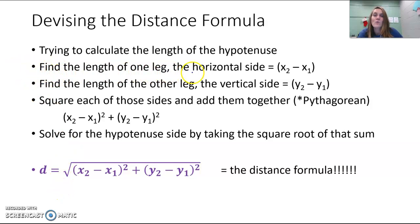We can actually put all of that together to create a distance formula, right? If we find the length of one of the sides, the horizontal side, we subtracted the x's. So x sub 2 minus x sub 1. To find the length of the vertical side, we subtracted the y's. y sub 2 minus y sub 1.